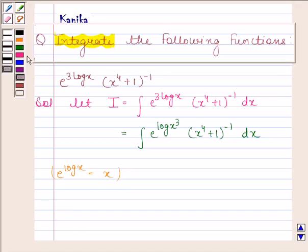So this is equal to integral x cube into x to the power 4 plus 1 to the power minus 1, which can be written as 1 by x to the power 4 plus 1 dx.